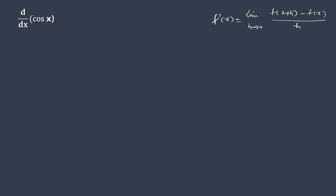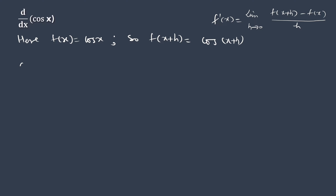The procedure to find the derivative of cos x is similar. Here f(x) is cos x, thus the corresponding f of x plus h is cos(x+h). Substituting these values in the derivative formula.